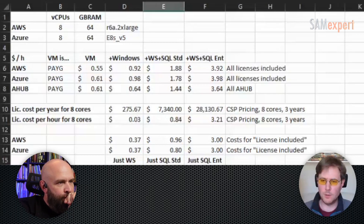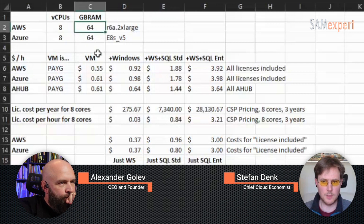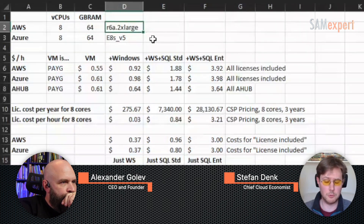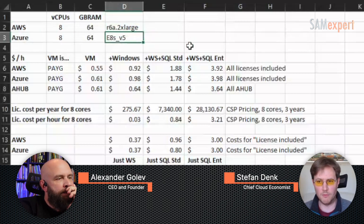We are looking at the comparison of a likewise sized virtual machine. I basically just looked at the cheapest option to get eight CPUs and 64 gigabytes of RAM on AWS, which was the r6a.2xlarge. I looked at the cheapest option to get the same on Azure, which is the e8s v5.